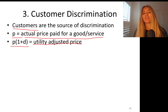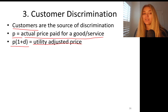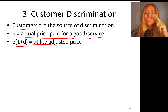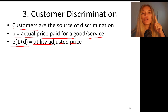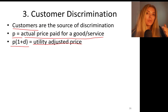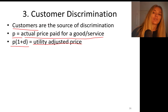This is a utility-adjusted price. For instance, imagine a discriminatory customer who doesn't want to buy a product from a minority group. If customers discriminate, their perceived price of a good is utility-adjusted with a discrimination coefficient D. When a firm cannot hide their minority workers from customers who discriminate, customer discrimination can have a negative, adverse effect on the wages of that minority group.